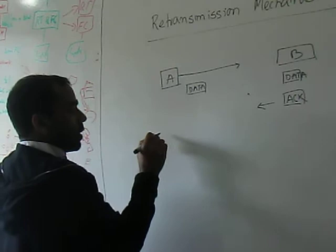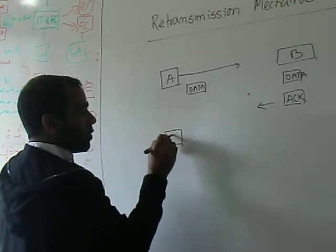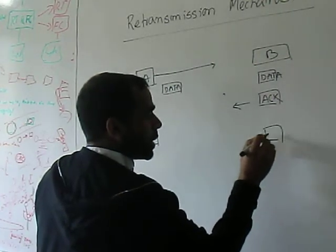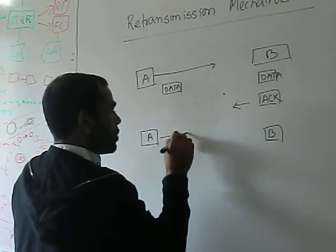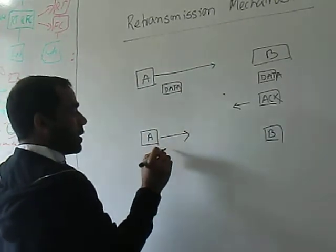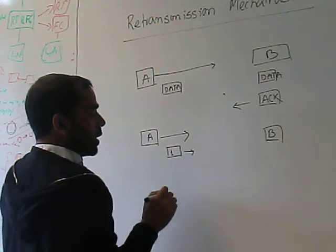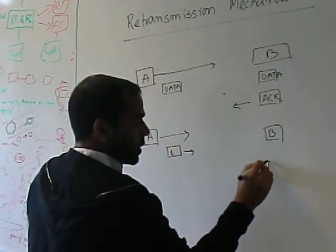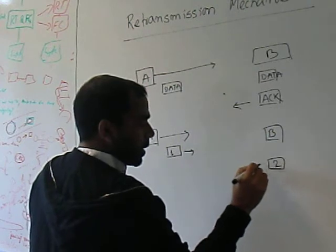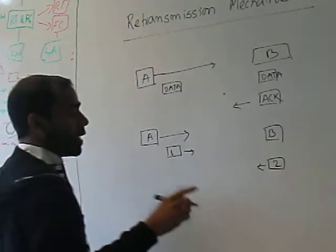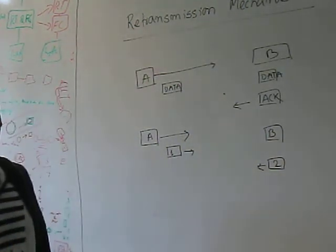Now let's assume that A sends a data packet to B and number one packet has been sent and it has been received. It sends the acknowledgement telling that, okay, I received packet number one, please send me packet number two.